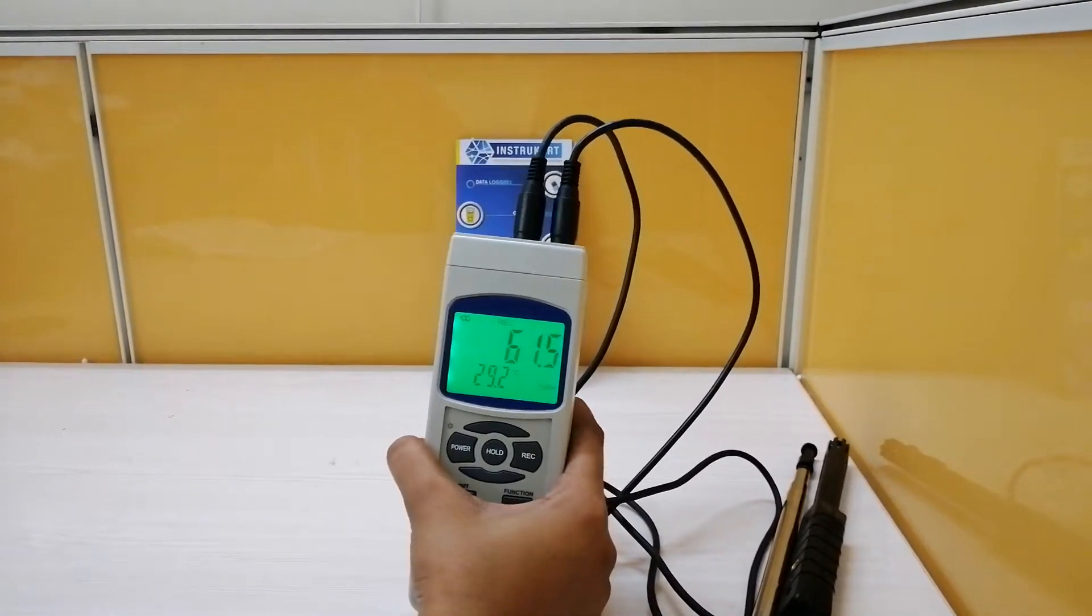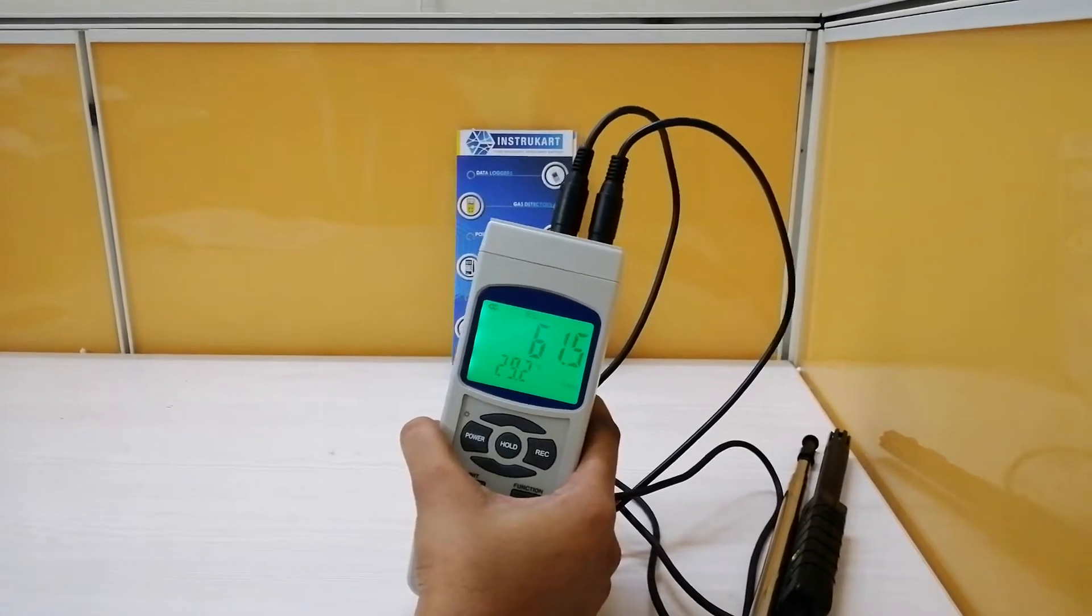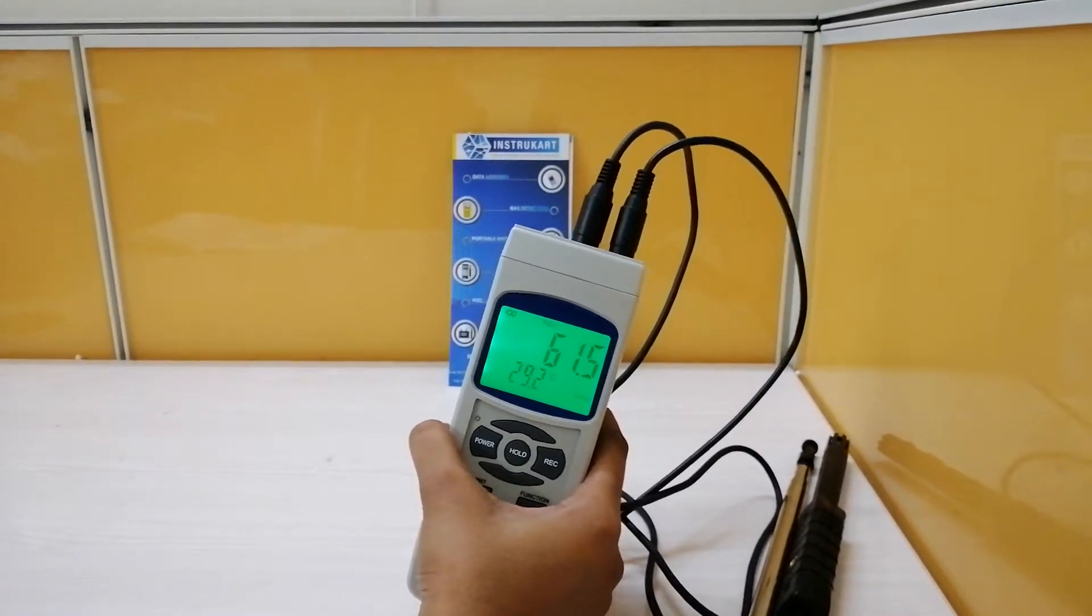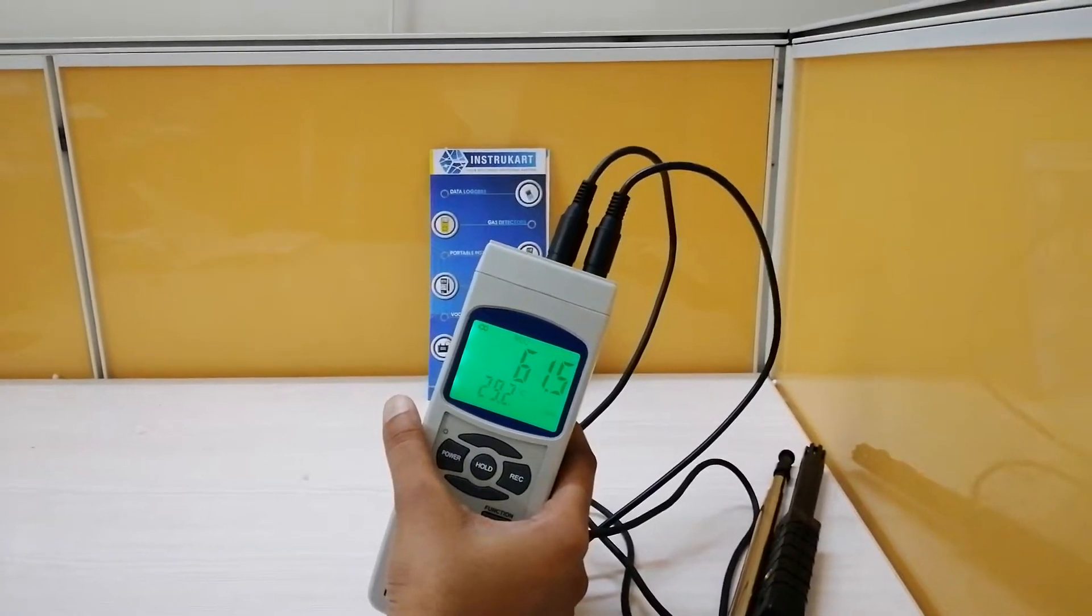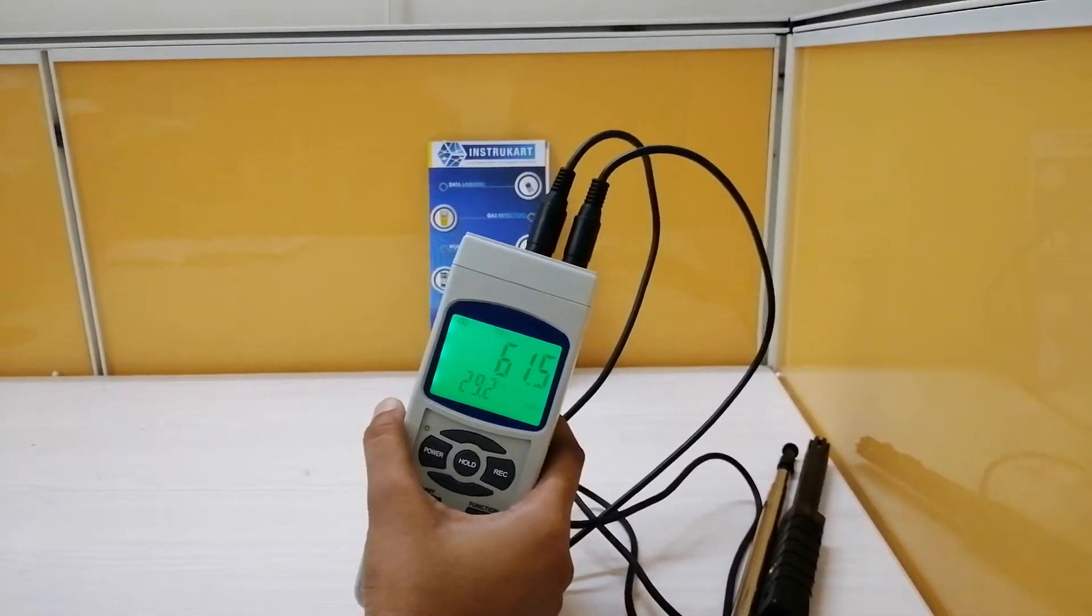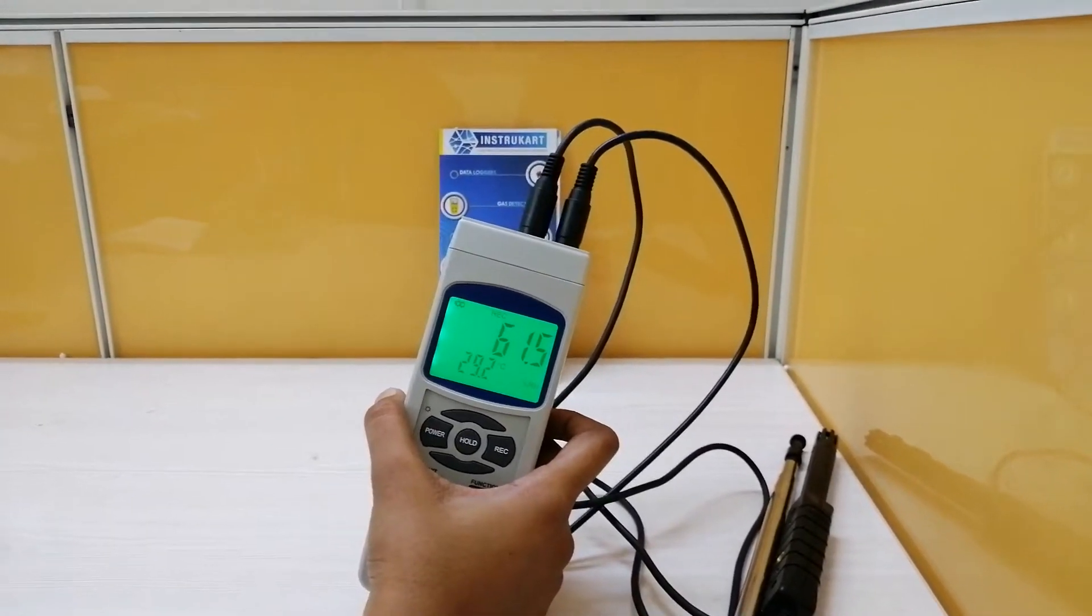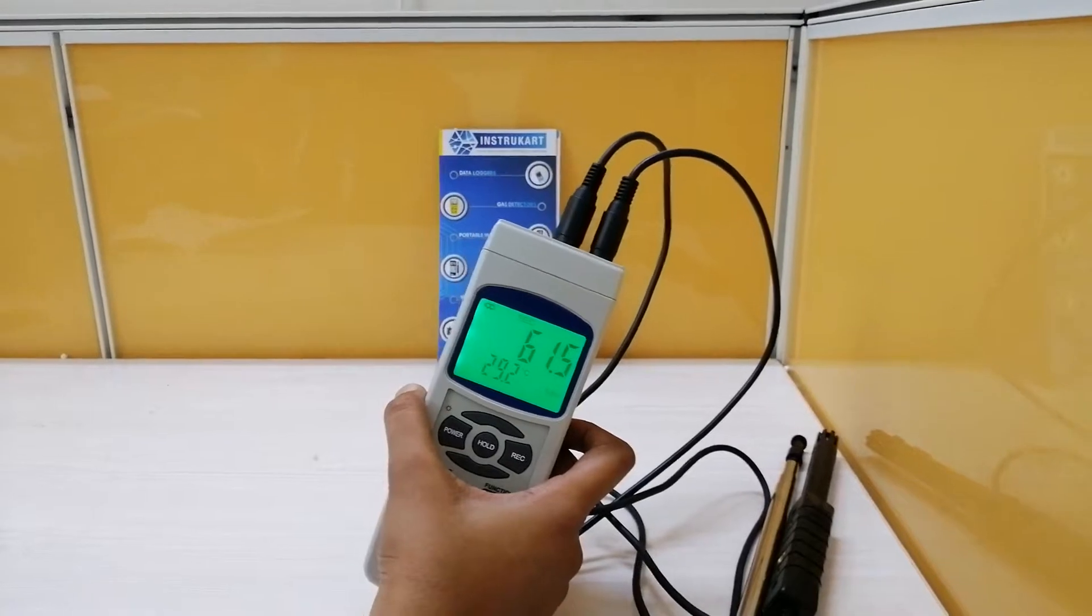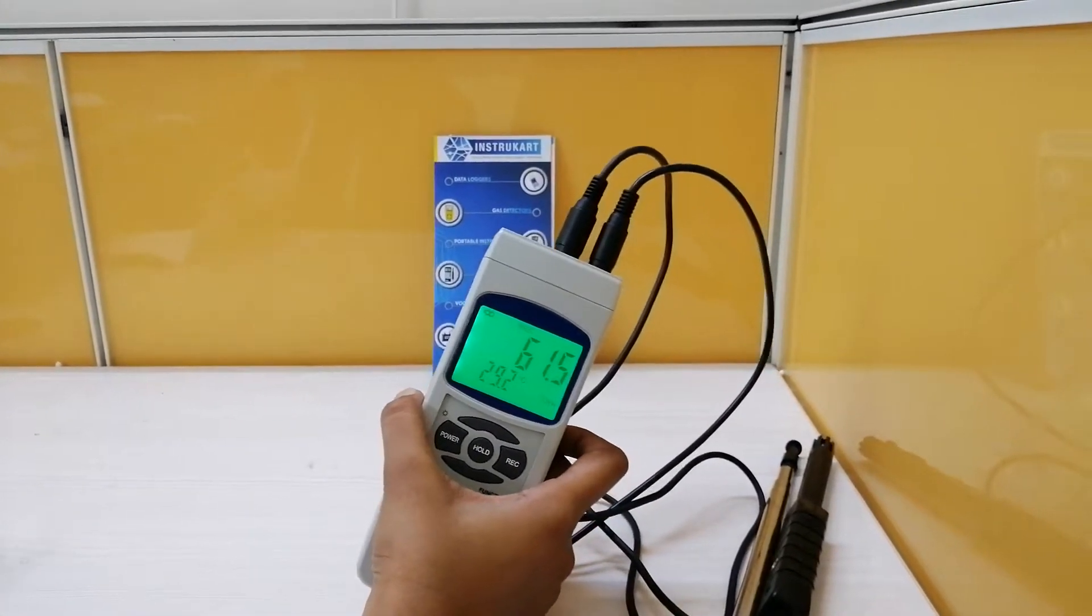You can also insert the K-type and J-type thermocouples based on your application. The main important function in this anemometer is data logging. In data logging it has two types: manual type and auto type.